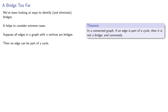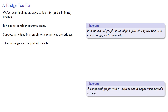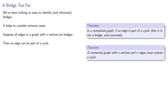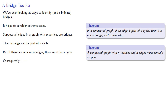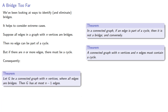But we also know that cycles can be unavoidable. A connected graph with n vertices and n edges must contain a cycle. So if there are n or more edges, there must be a cycle. Consequently, if g is a connected graph with n vertices where all edges are bridges, then g has at most n-1 edges.